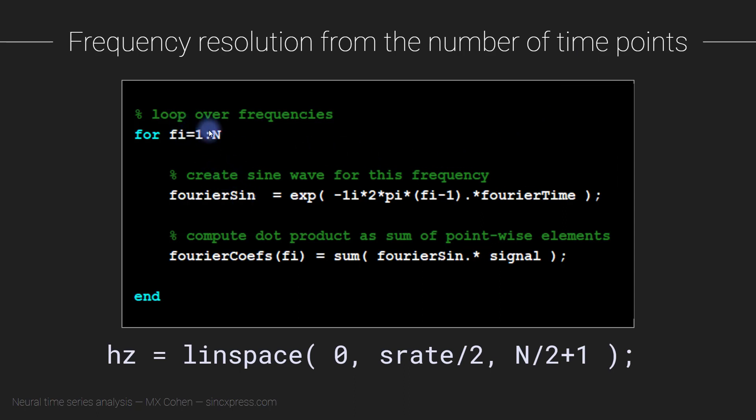This is a brief reminder that the number of frequencies, the number of sine waves that we construct in the Fourier transform, is determined by n, where n is the length of the signal. We have the reconstructed vector of frequencies in Hertz that goes from zero to Nyquist in n over two plus one steps.